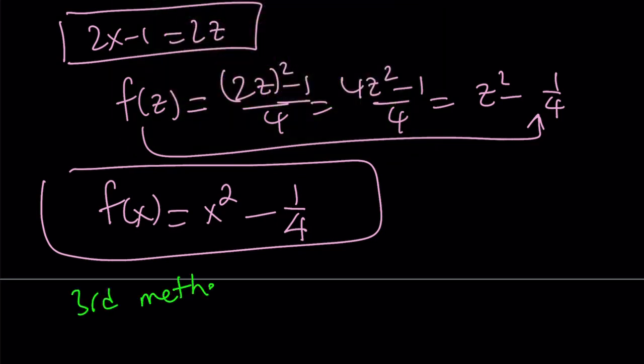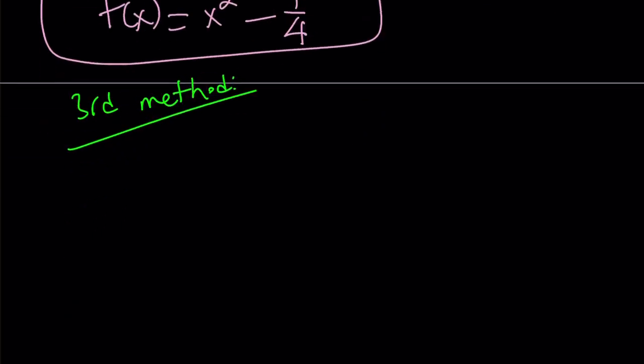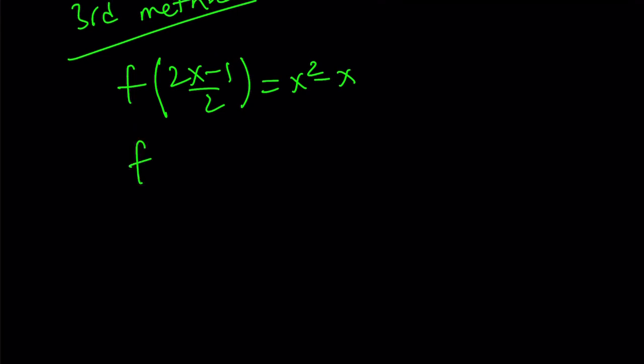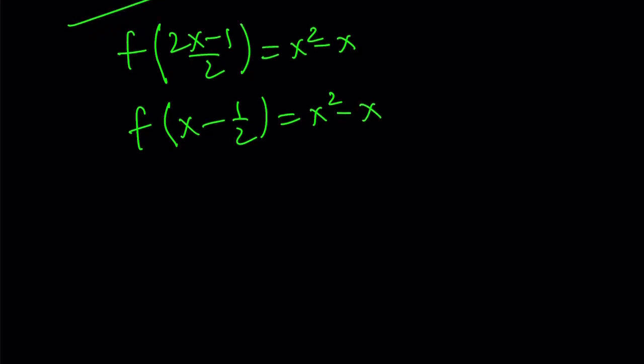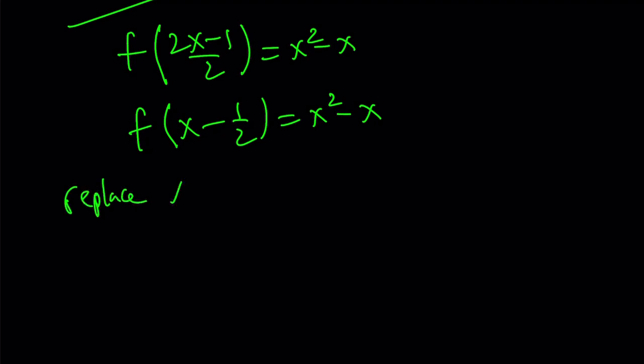Let's go ahead and talk about the third method. And now we're going to finalize this. Okay, for my third method, I'm going to do the following. I'm just going to go ahead and separate the top and write this as f of x minus 1 half equals x squared minus x. And instead of using a different variable like t or z, I'm going to use x again. And I want to replace x with x plus 1 half.